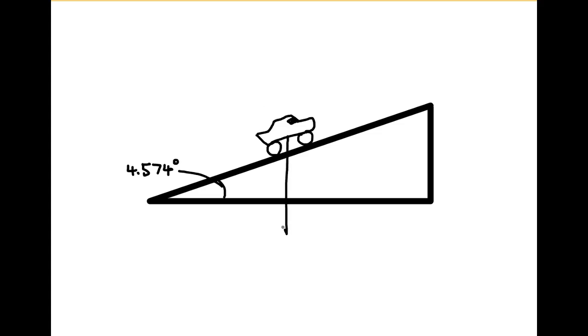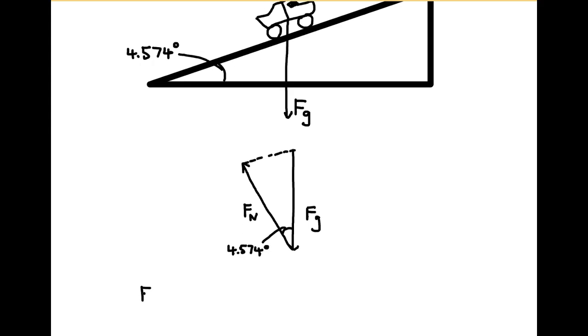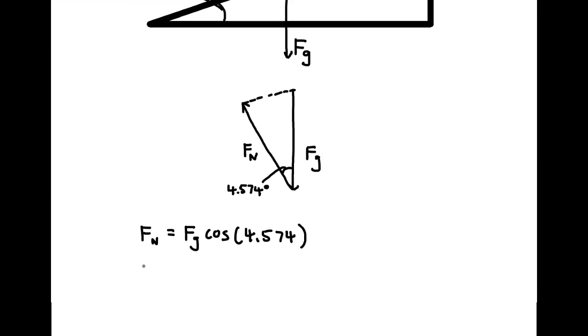So I draw the vector triangle composing of FG and FN. And I know that this angle is the same angle as the one we found previously. I need to find a value for one of the sides of the triangle. Then use trigonometry to find FN. I know that we can find FG since FG is equal to mass times gravity.